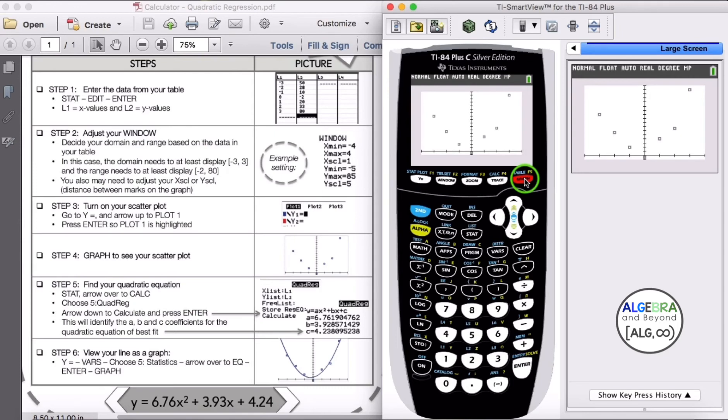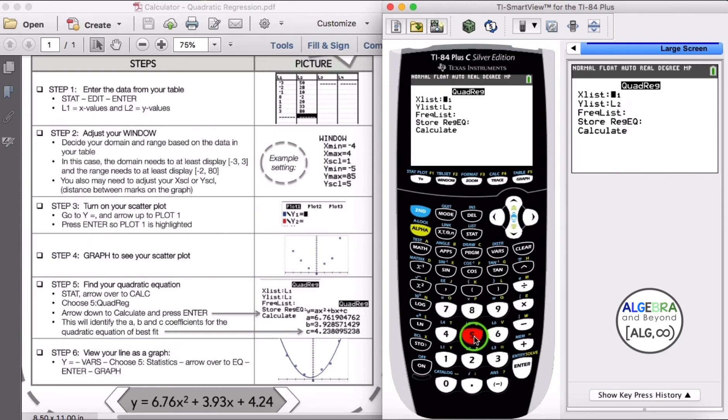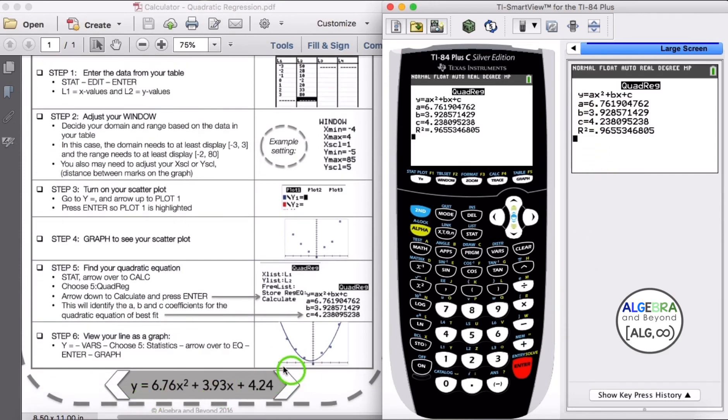Now I can move to step 5, find your quadratic equation. I'm going to choose STAT, arrow over to CALC, and choose number 5, which is quadratic regression. I'm going to enter until I see the data. And there it has your Y equals AX squared plus BX plus C as your standard form, and you have your A, B, and C value. If you look down at the bottom of the quadratic regression sheet, I have the equation there rounded to two decimal places.